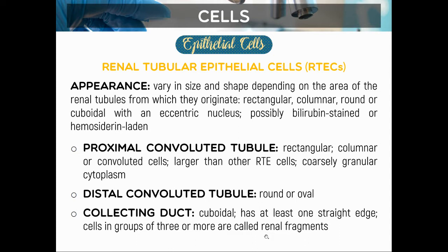Good day everyone. Today we continue our discussion on the microscopic examination of urine. This is the last type of cell we will encounter, and for the remaining slides we will proceed with casts and urinary crystals. Here we have our renal tubular epithelial cells, or RTEs. Their appearance varies in size and shape depending on which tubule they originate from. We have three types of tubules: the proximal convoluted tubule, the distal convoluted tubule, and the collecting duct. They may appear rectangular, columnar, round, and their nucleus is eccentric, meaning not at the center, unlike transitional epithelial cells whose nucleus is centrally located.